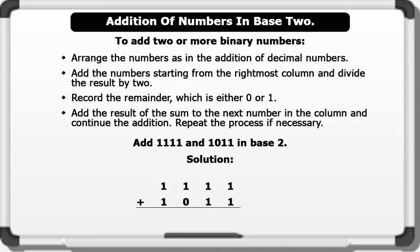1 plus 1 equals 2. Divide 2 by 2 equals 1 remainder 0; we write down 0 and carry 1. 1 plus 1 plus 1 equals 3. 3 divided by 2 equals 1 remainder 1; we write down 1 and carry 1. 1 plus 1 plus 1 equals 3 again; 3 divided by 2 equals 1 remainder 1; we write down 1 and carry 1.